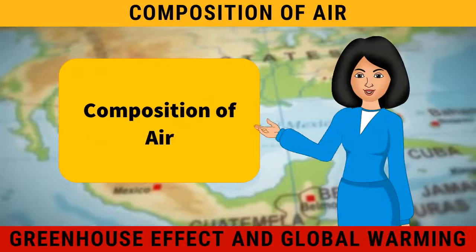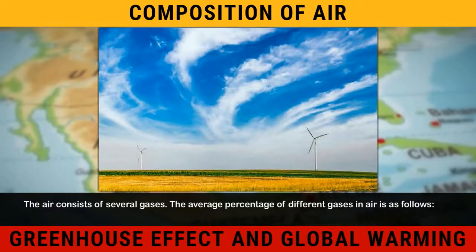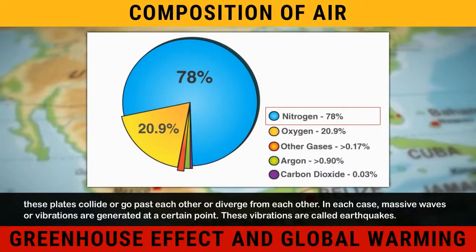Composition of air. The air consists of several gases. The average percentage of different gases in air is as follows: Nitrogen, 78%. Oxygen, 21%.